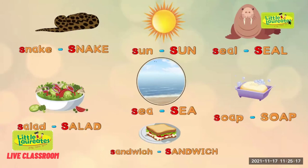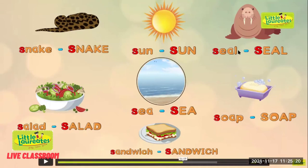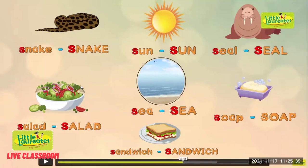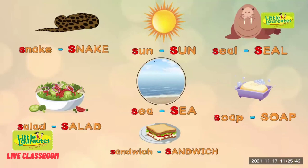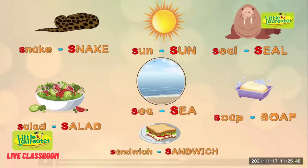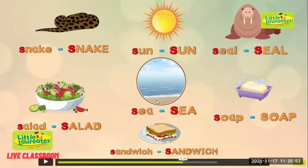S is for sun. S, seal. S says S — seal. S says S — what is this? Salad. S says S — sea. Sea means shomudro — Samundar in Hindi, and in English, sea. S, sea.